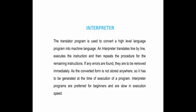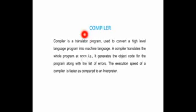As the converted program is not stored anywhere, it has to be generated at the time of execution. This means each time the program is executed, it will get converted into object code or machine code. Whereas in the compiler, the object code gets saved.